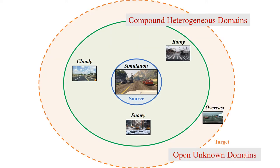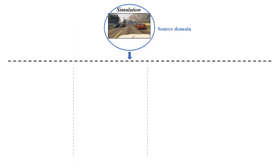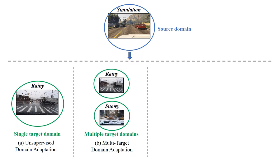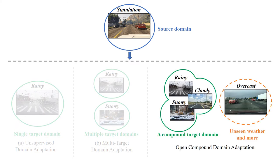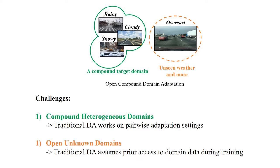Moreover, there are always open unknown domains out there, posing challenges to the robustness of AI system deployment. Compared with single and multi-target adaptation, here we formally define a more realistic setting named Open Compound Domain Adaptation. Our proposed task has several unique challenges, because it has to do with both compound domains and open domains.